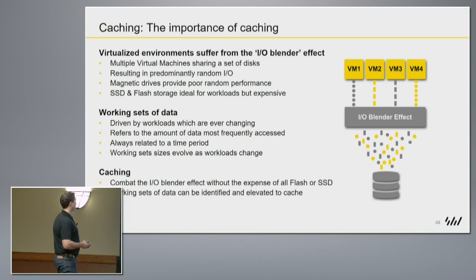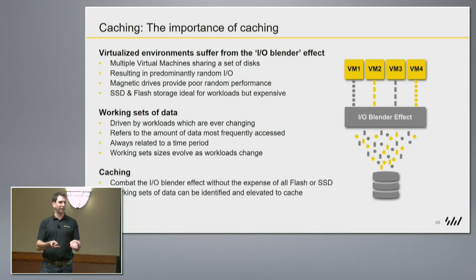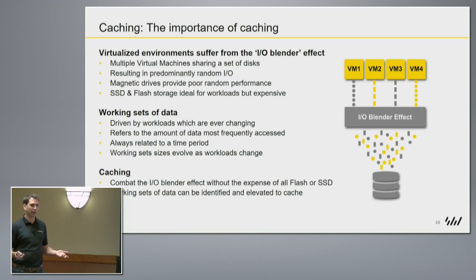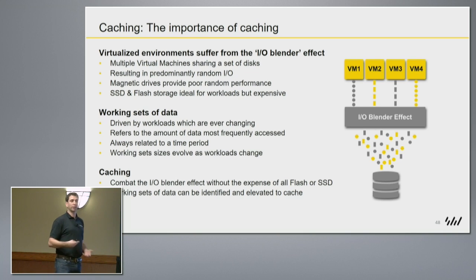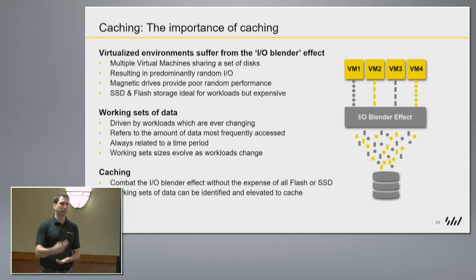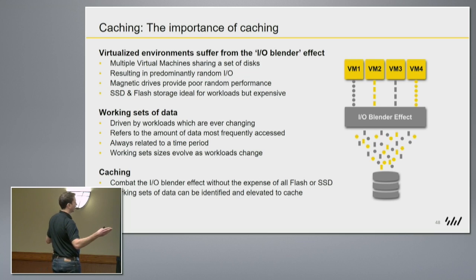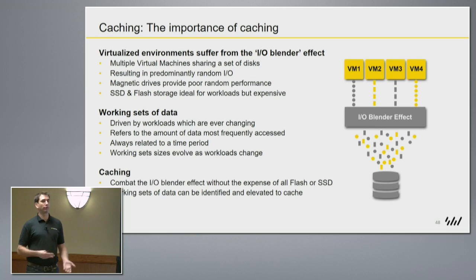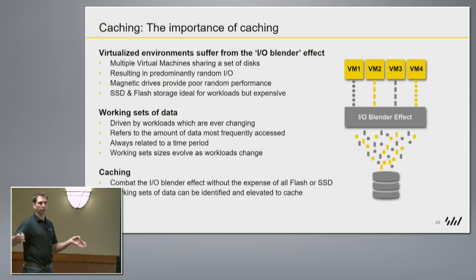Your virtual machines have a working set of data. If we had a Windows VM with an SQL database, you've got virtual disks of maybe 500 gigabytes. When you actually boot that VM, there's only going to be a subset of that 500 gigabytes that is frequently accessed — driven by the application. In this case it's our database: we're frequently amending records and reading stuff back. So that 500 gigs could drop to just a few gigabytes as our working set. Working sets are ever evolving — the database isn't always reading and writing the same data; things change over time.